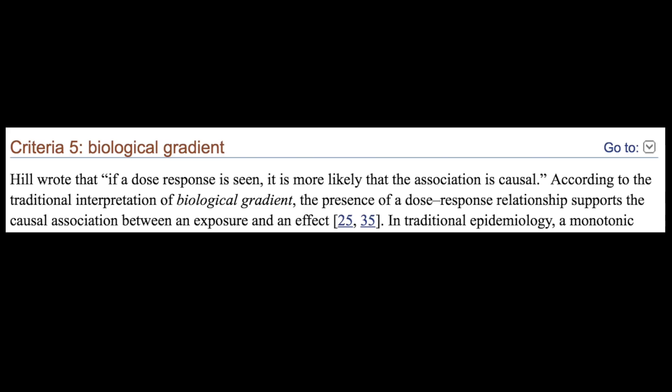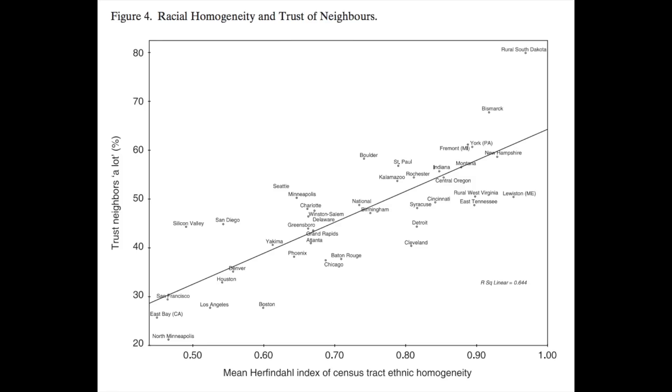Criterion five: biological gradient. If a dose-response is seen, it is more likely that the association is causal. Simply put, a little exposure should result in a little effect, and a large exposure should cause a large effect. We do see this upheld in the Putnam study — looking at the graph, if you add diversity to a town or city, trust goes down. This is very similar to a dose-response, thinking about the addition of multiculturalism as the dose and the lack of trust as the response.